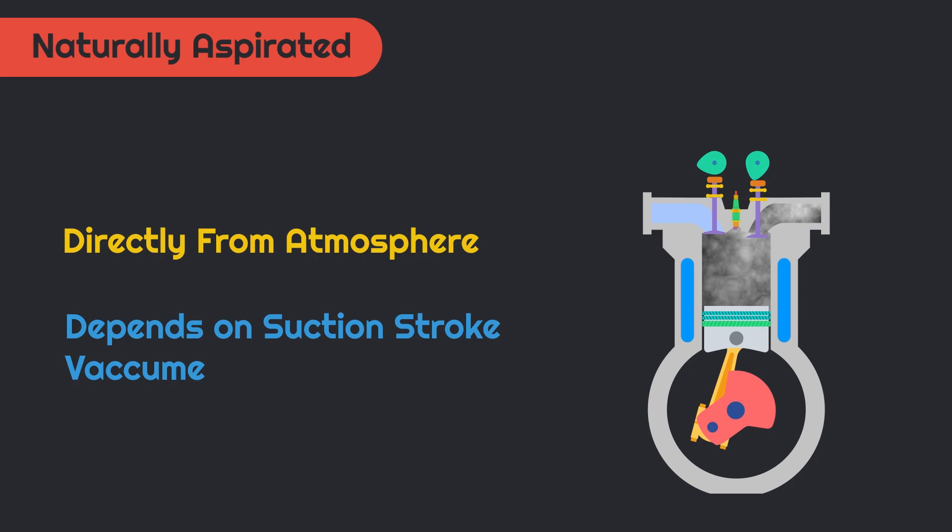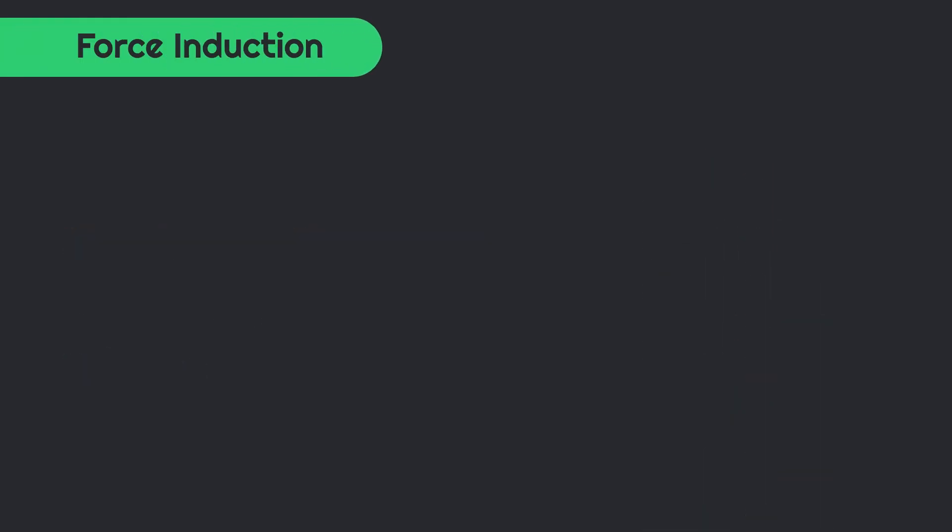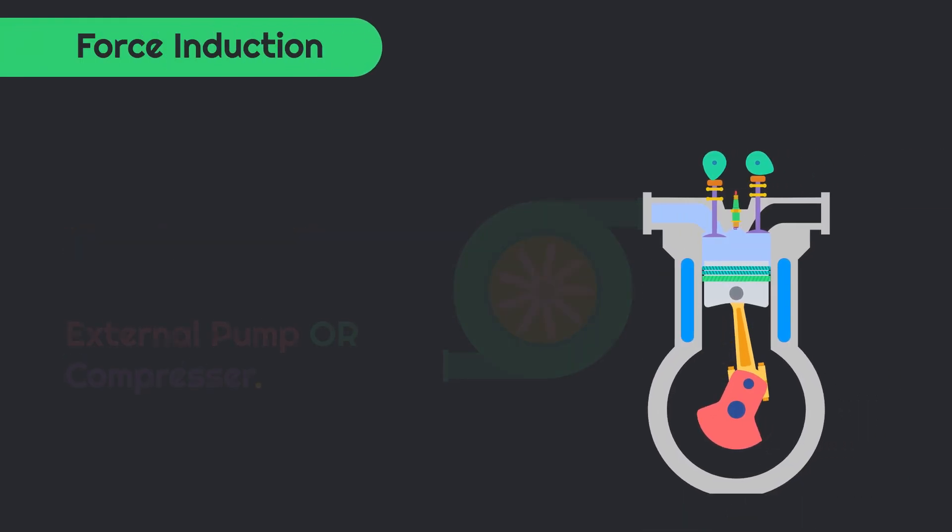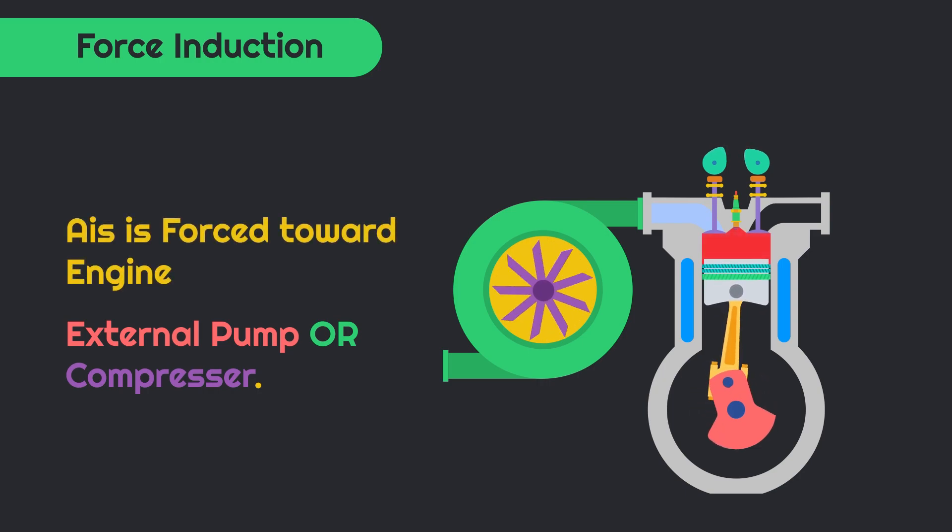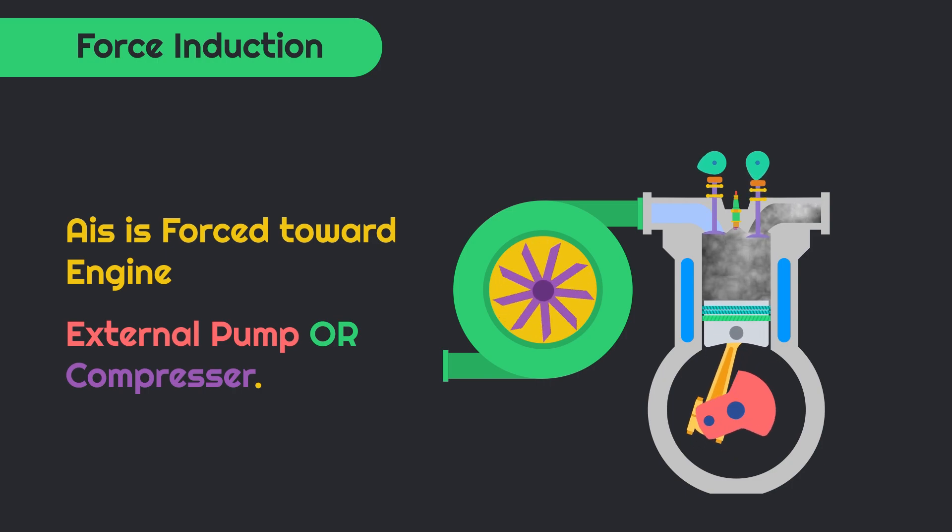On the other end, to speed up the intake process and increase the volumetric efficiency of the engine, a compressor or pump is used to compress the air. That compressed air used during intake is known as forced induction engine.